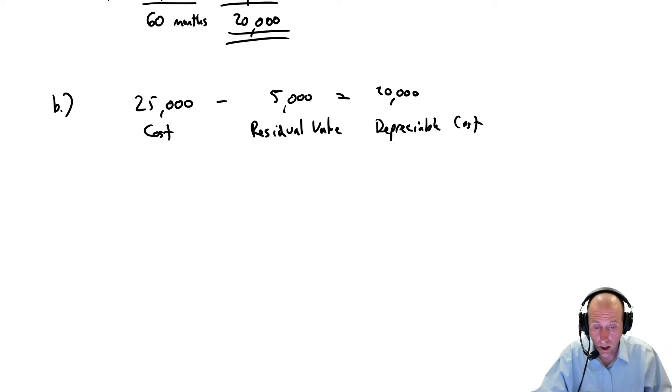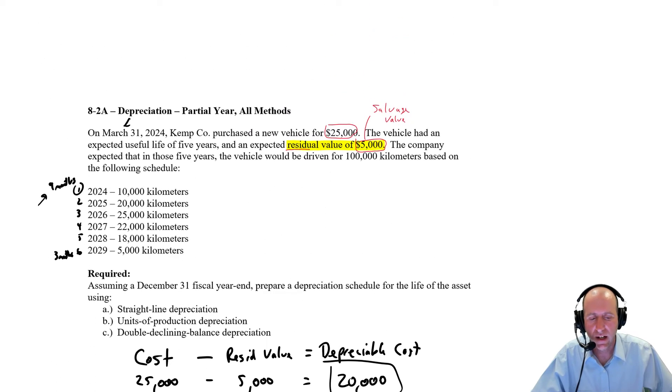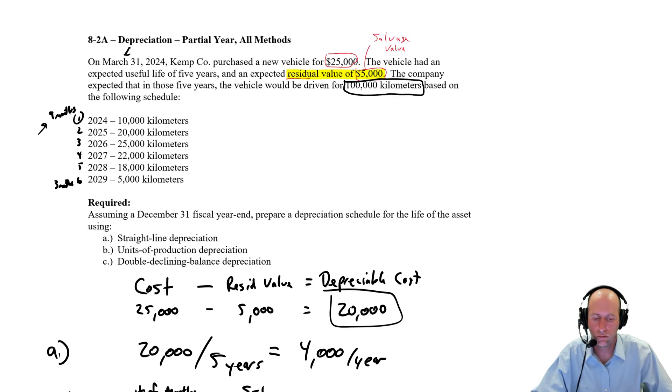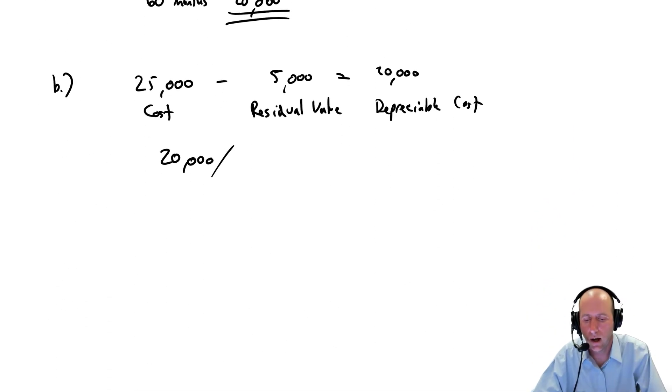Okay, so where to go from here? Well, last time we said, okay, we took that depreciable cost and we divided by the number of years. Here we're going to take the depreciable cost and divide by the total usage we think we'll get out of the asset. And we've estimated 100,000 kilometers. That's how we're measuring our usage. So let's divide this by 100,000 kilometers.